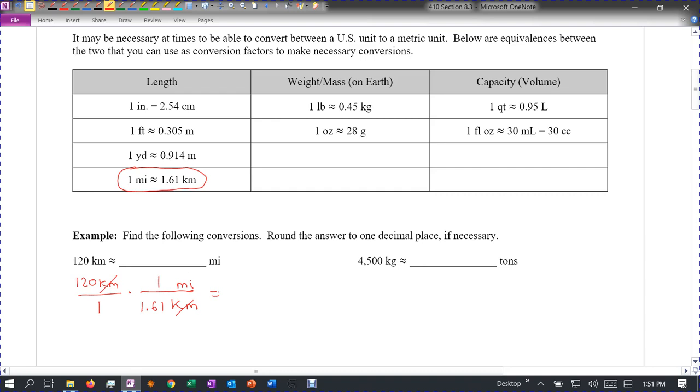When we multiply straight across, we get 120 miles over 1.61. So now what we do is divide 120 divided by 1.61. And that's approximately equal to 74.5. It says to round to one decimal place, so I'm just going to do 74.5 miles.